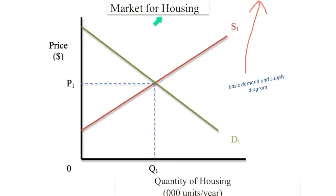We've got a diagram for the market for housing. We've got the quantity of housing in thousands of units per year. Let's imagine this being for apartments, and the government wants to come in and put a price ceiling, which is a maximum price, on the price of housing. So like all economic situations, you begin with the beginning of the story, and the beginning of the story is this diagram. In microeconomics, it's the basic demand and supply diagram, which has the components of price, dollar sign or any currency, P1, zero, Q1, quantity of housing, number of units, the year, demand one, S1, supply one, and a title.